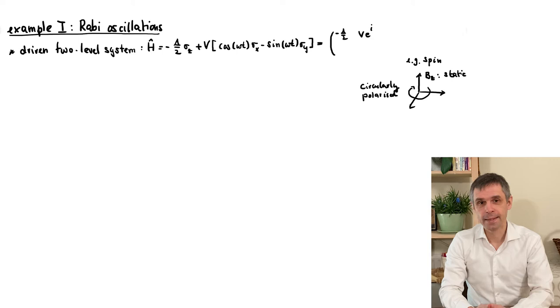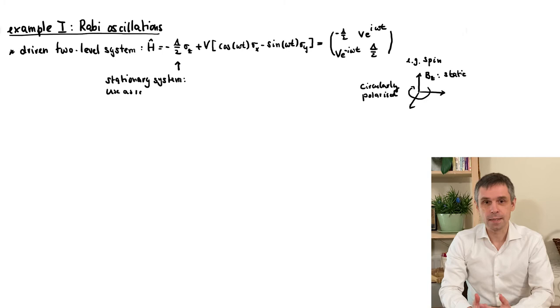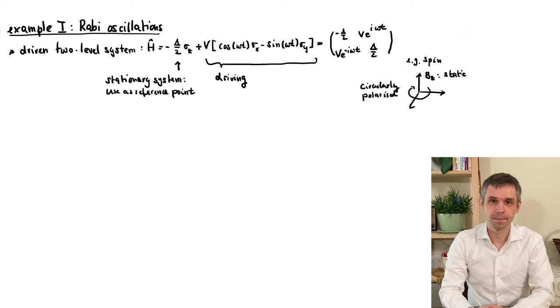The Hamiltonian then corresponds to the 2x2 matrix given here, where the off-diagonal terms combine into exponentials by the Euler rule. The relevant parameters are the energy-level splitting delta in the static part, which we take as a reference system to compare our results with, as well as the driving amplitude V and the driving frequency little omega. These are all real parameters, as the Hamiltonian must be Hermitian for all times.